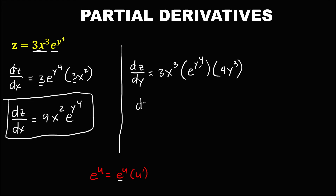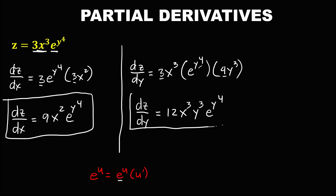Then for the derivative of z with respect to y, we assume that x is a constant. Bring down the constant 3x to the power 3, times the derivative of e to the power y to the power 4. Using the chain rule, the derivative brings down the inner exponent. To simplify, the derivative of z with respect to y equals: multiply 3 and 4 to get 12, then x to the power 3 times y to the power 3 times e to the power y to the power 4.